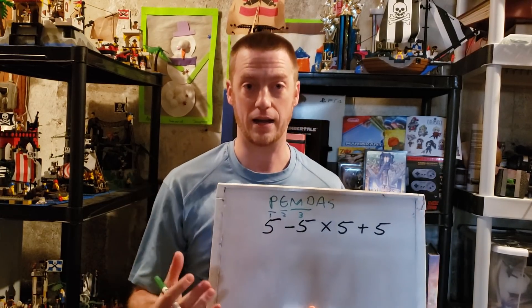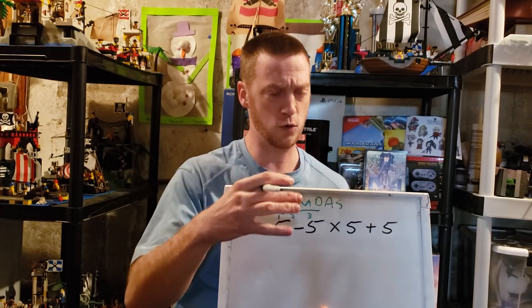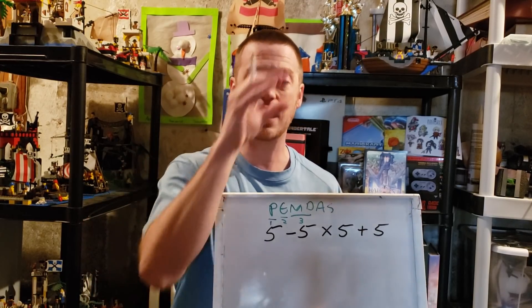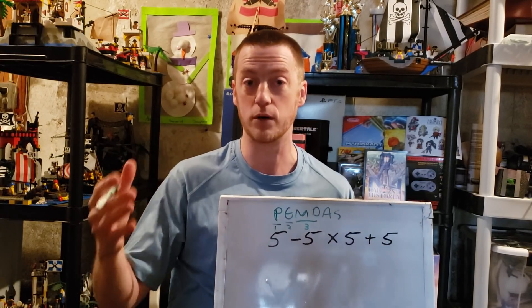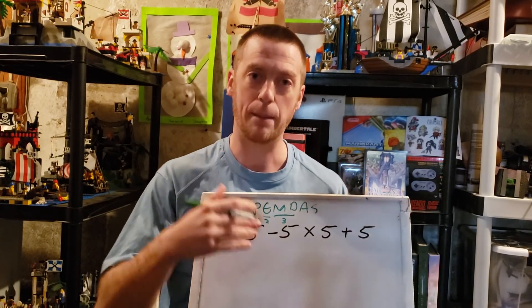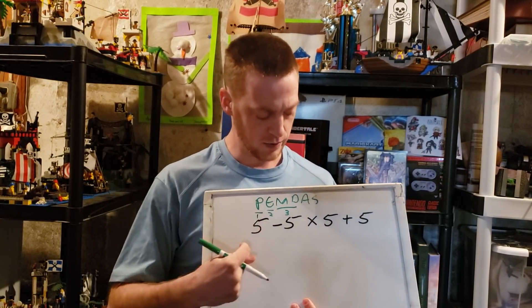Multiplication is repeated addition of the same number, whereas division is repeated addition of the same number but the reciprocal of that. For example, 4 divided by 4 really is 4 times 1/4, 1/4 being the reciprocal of 4. 4 times 1/4 would be 1, just like 4 divided by 4 is also 1.